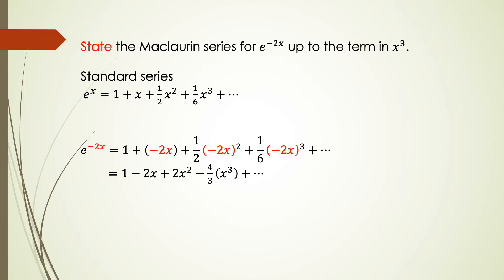Then we simplify. We get the final solution for the expansion of e^(−2x) equal to 1 minus 2x plus 2x² minus 4 over 3 x³ and keep going to higher powers of x.